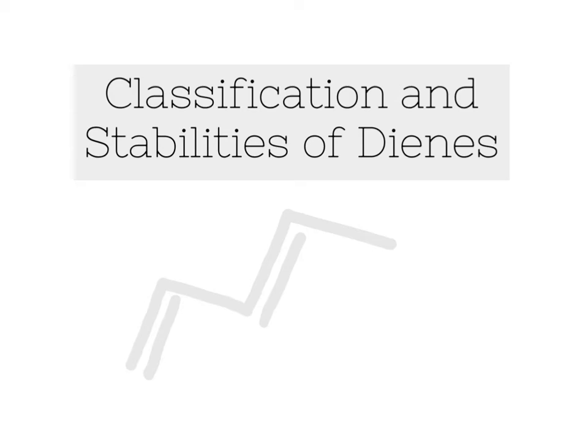In this video, we focus on two topics. One of those two topics is the ways that dienes are classified. We're going to use three terms to describe the classification of dienes as isolated, accumulated, and conjugated. We will also compare the stabilities of these three types of dienes, learning about what drives why some types of dienes are more stable than others. In later videos this chapter, we will look at reactions specifically of conjugated dienes to compare and contrast the reaction types that conjugated dienes undergo relative to other types of dienes, particularly isolated dienes.